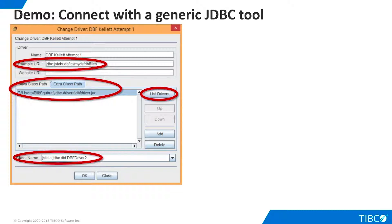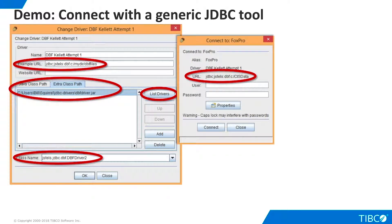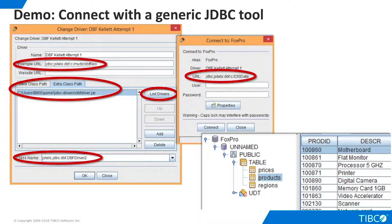This will be very useful later when we define the new data source in TDV. Now we can define a new connection in Squirrel using the location of our test data. Note that these XBase files do not require a user ID or password. We connect, and Squirrel lets us browse the tables and view their contents. We now know that we can connect successfully via JDBC. Note that these DBF files do not require any kind of FoxPro database server to be running. Our JDBC driver performs all the SQL functionality, and we just have to point it to our tables.